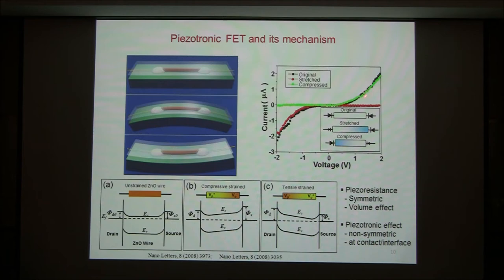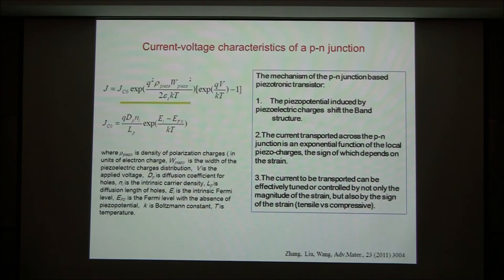On the tensile strain, the red curve is dilated this way. On the compressive strain, the green curve is dilated that way. Green and red are two reverse polarities. Why is this? It's because the polar charge here — to verify the mechanism proposed in our two important letters and papers in Nano Letters in 2008.